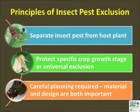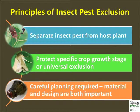Insect pest exclusion is not a new concept and it is not a silver bullet solution to all pest problems. Many exclusion practices like the use of row covers, plant collars, and fruit bagging are popular among gardeners. The main idea is to block insects from feeding and or reproducing on host plants. This video provides more research-based information about the benefits of small net houses and low tunnels.